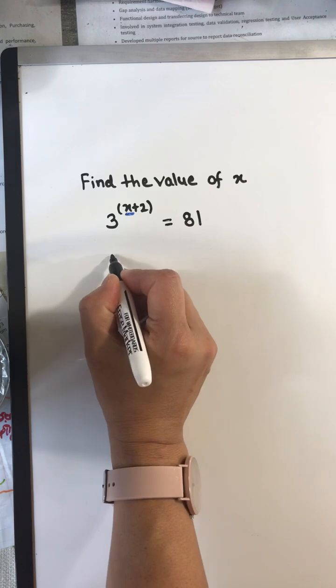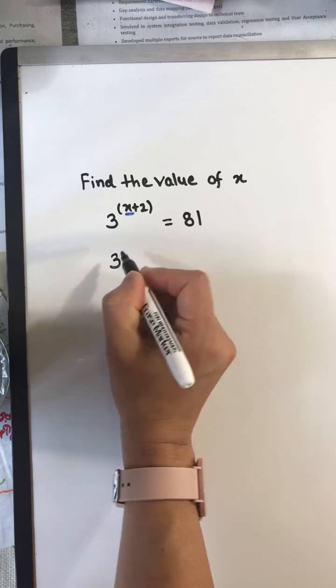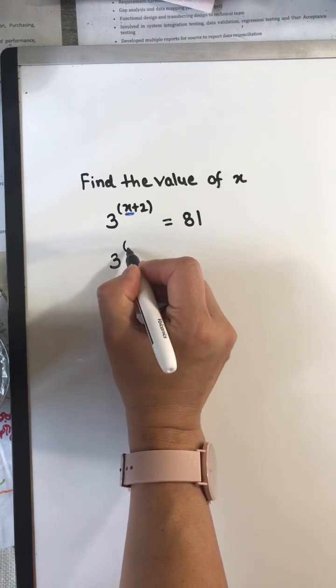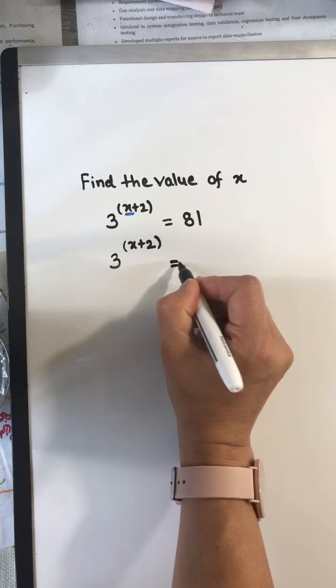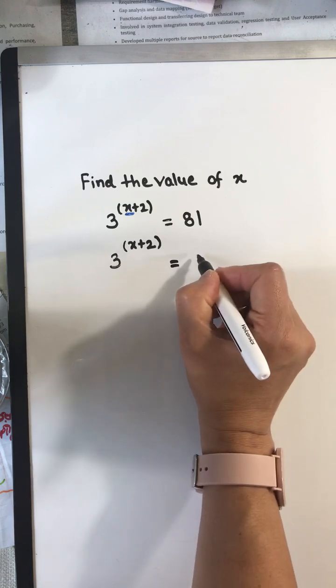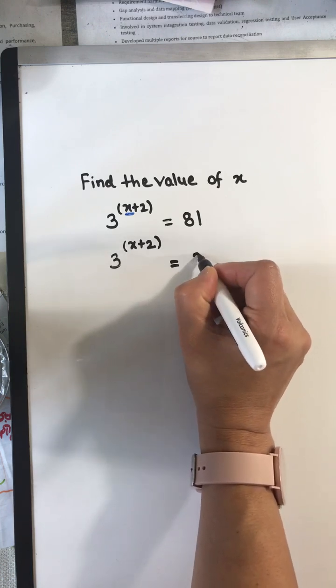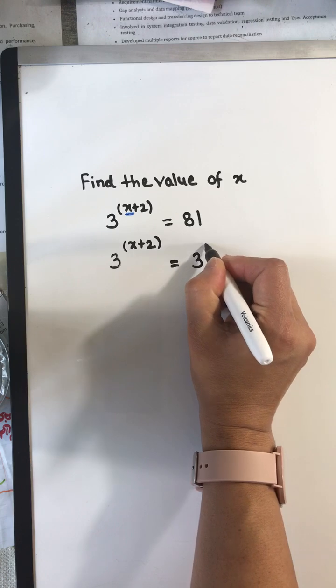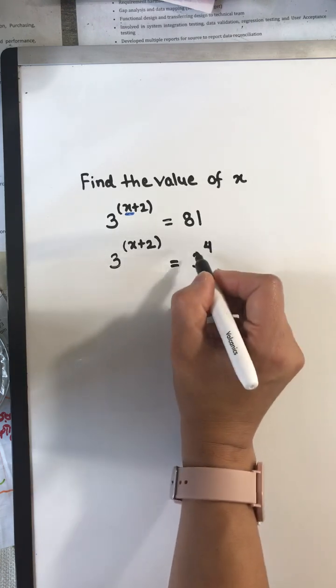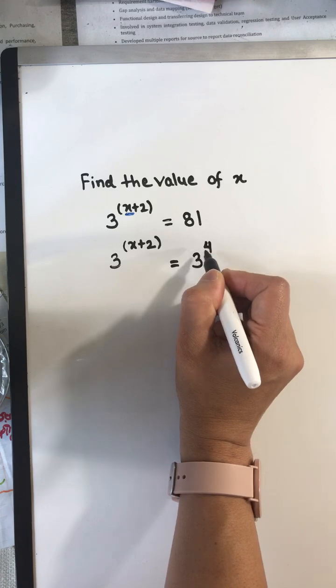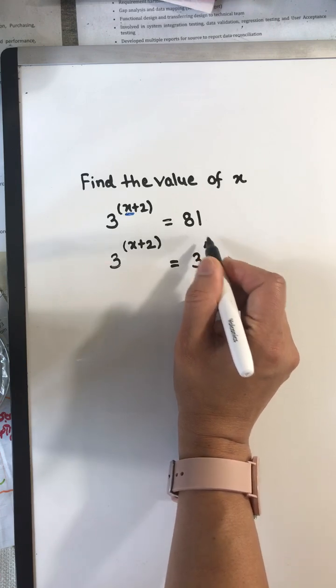We can write 81 on the left hand side as 3 to the power x plus 2, and on the right hand side 81 can be written as 3 to the power 4, because 3 times 3 is 9 and 9 times 9 is 81.